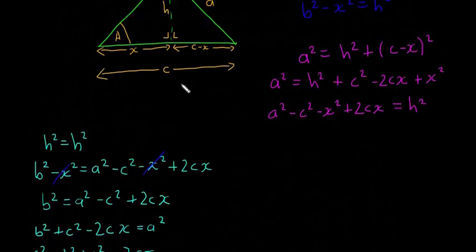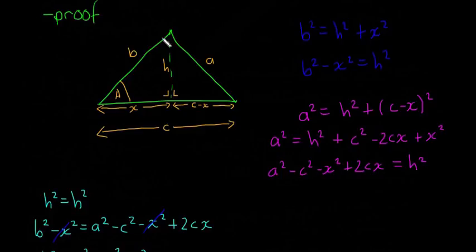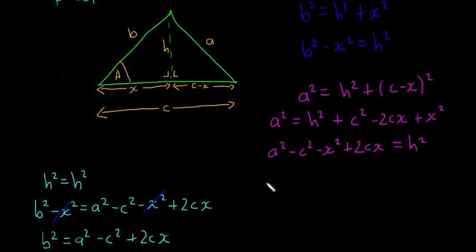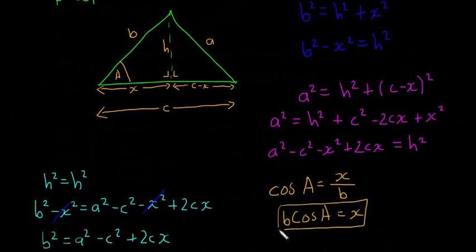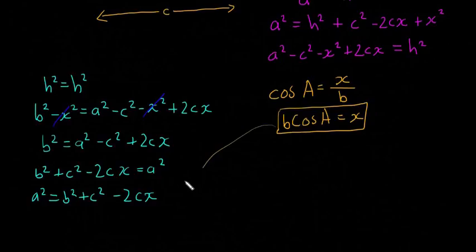The last step is to go back to the left right-angled triangle and use cos A. Cosine equals adjacent over hypotenuse, so cos A = x / b, which means x = b·cos A. We substitute x = b·cos A into our formula a² = b² + c² − 2cx.